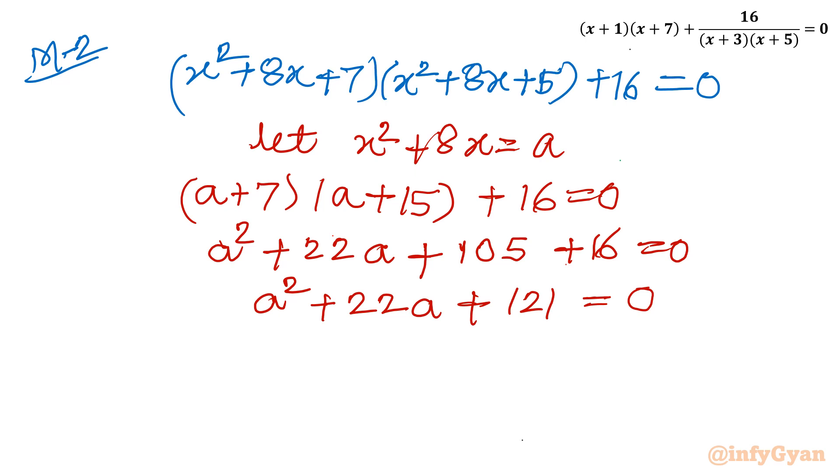And see, if I will write in that form, a square plus 2 times 11 times a plus 121. So it is looking like one identity, a square plus 2ab plus b square. So I will write directly a plus 11 whole square, it is equal to 0. Same way, once you are taking substitution also, equation is coming out same with substitution only.